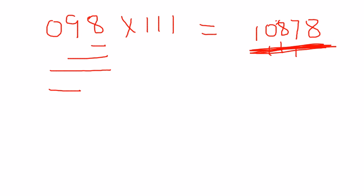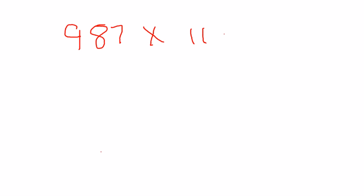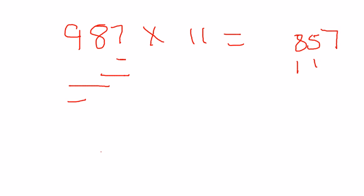Another mismatch example: 987 × 11. Here there are only 2 ones, so bars go up to a maximum of 2. Starting: 7 × 1 = 7. Two bars: 8 + 7 = 15, write 5 with 1 carry. Two bars again: 9 + 8 = 17 plus 1 carry = 18, write 8 with 1 carry. Single bar: 9 plus 1 carry = 10. Answer: 10857.